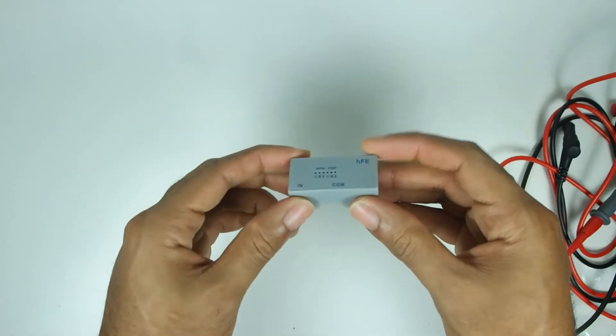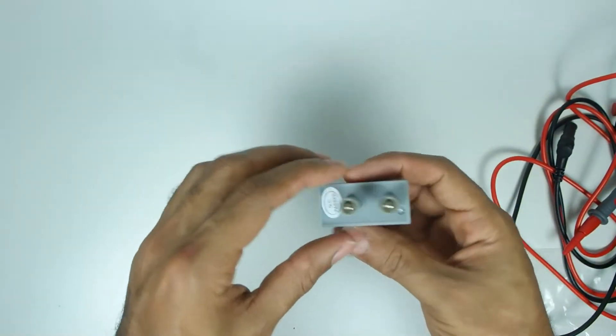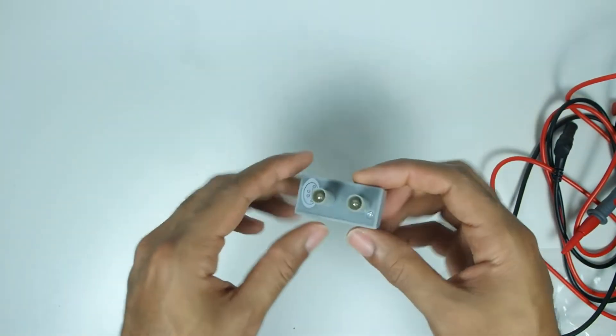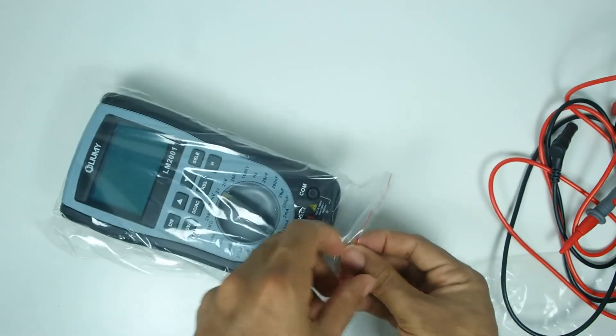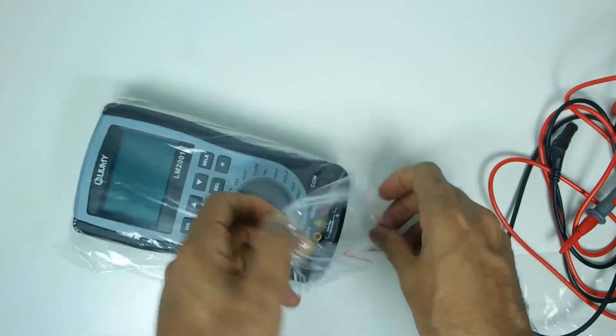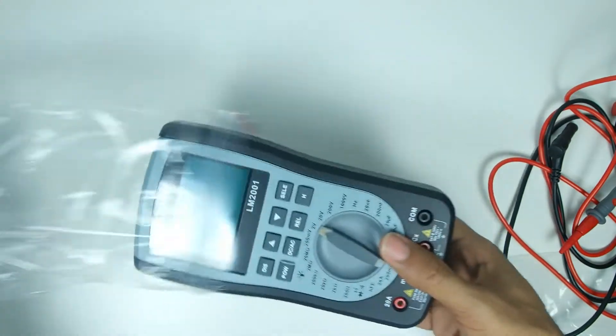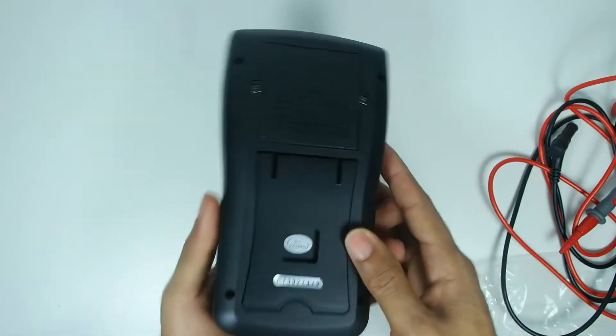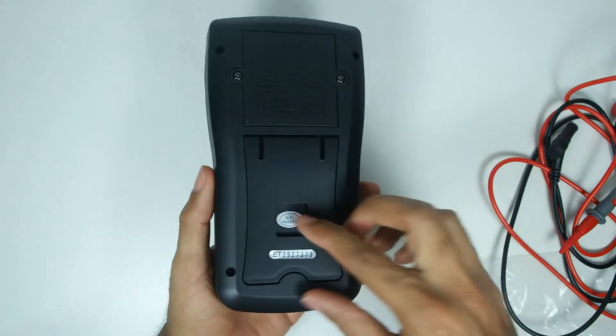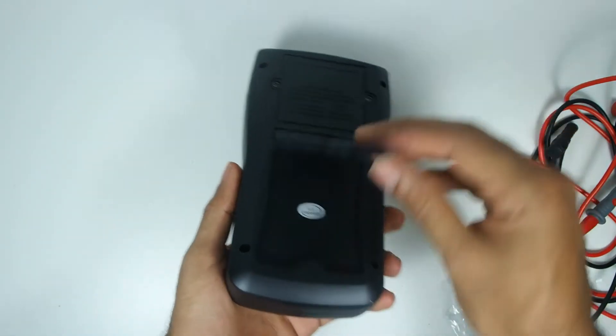We also have here the device for measuring the amplification of transistors. And here we have the multimeter itself. The multimeter comes inside of a ziplock bag. Very clean. The latch at the back is magnetic, and at the back we also have the battery compartment.